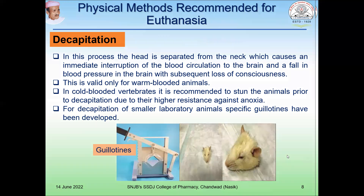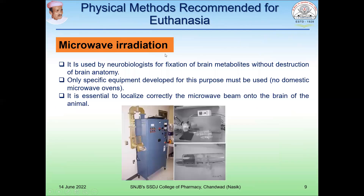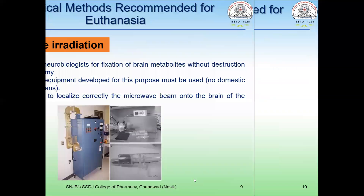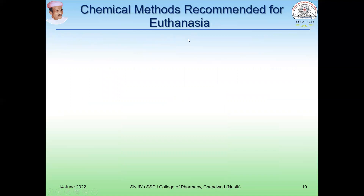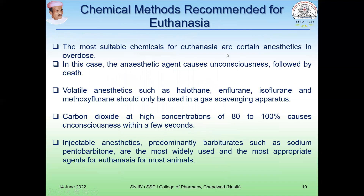Another physical method is microwave irradiation, used by neurobiologists for fixation of brain metabolites without destruction of brain anatomy. Only specific equipment developed for this purpose must be used — no domestic microwave ovens. It is essential to correctly localize the microwave beam only to the brain of the animal.